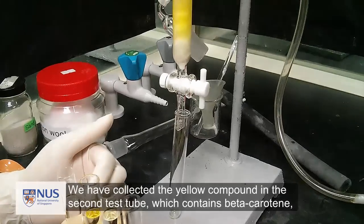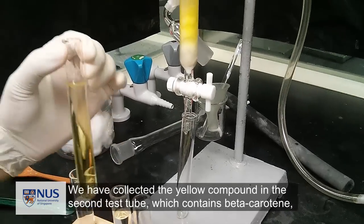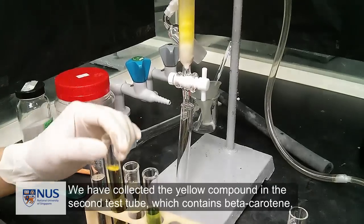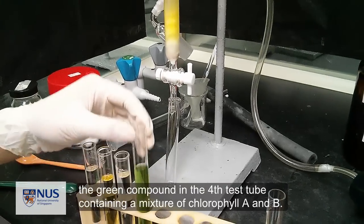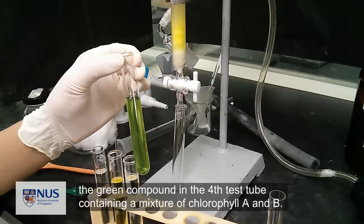We collected the yellow compound in the second test tube, which contains beta-carotene, and the green compound in the fifth test tube containing a mixture of chlorophyll A and B.